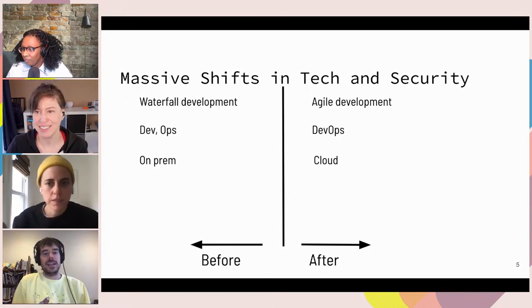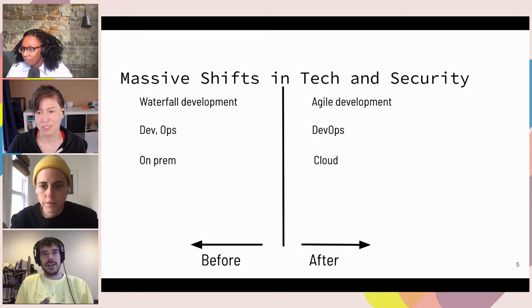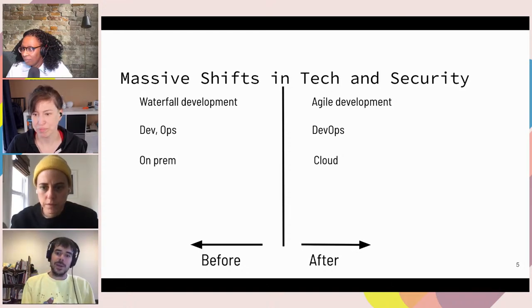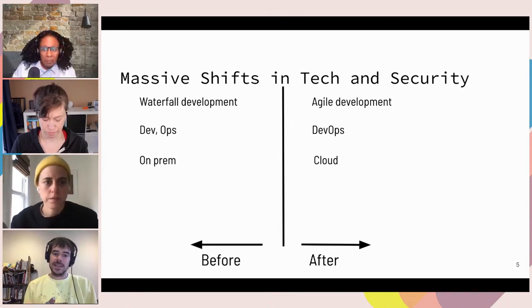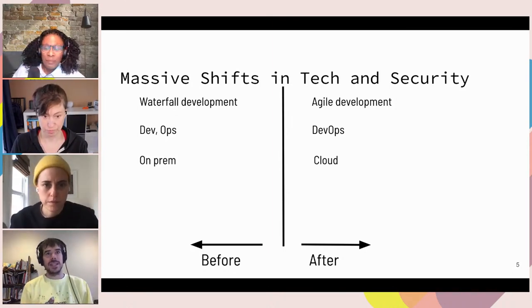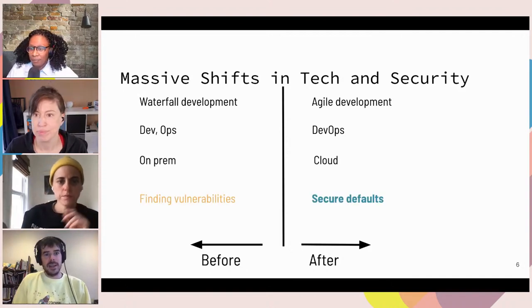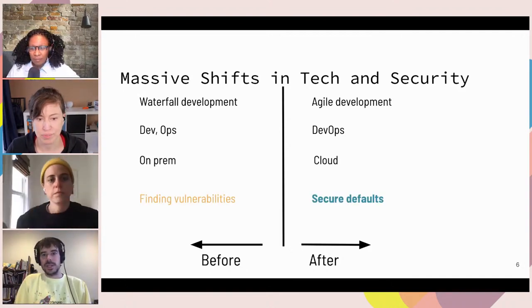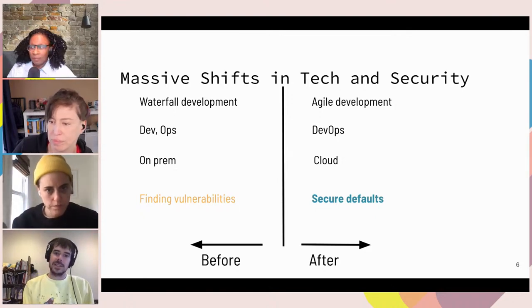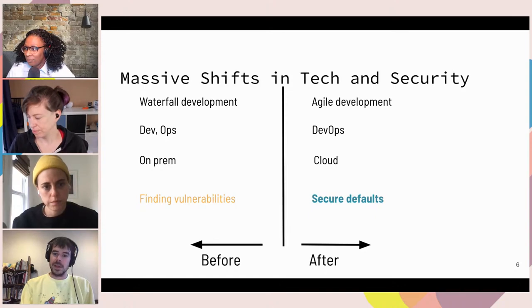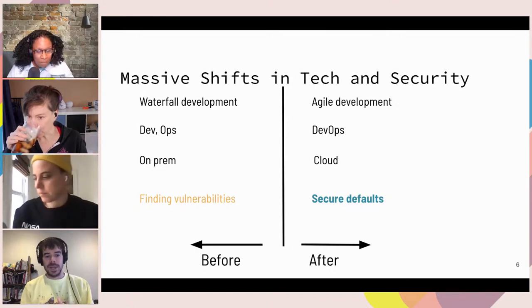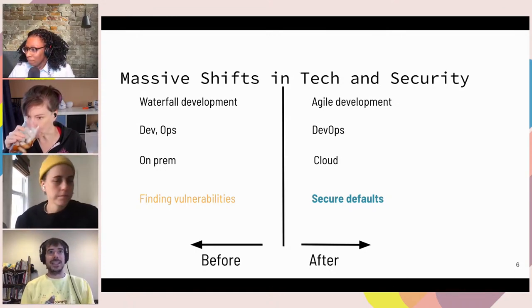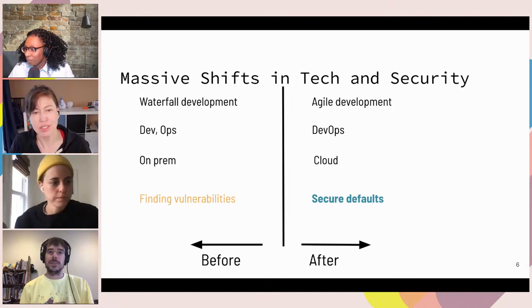Let's talk about how things are changing in the security industry. I think of it as analogous to how tech has changed — going from waterfall to agile, separate dev and ops to DevOps, from on-prem to cloud. Security is similarly going through a massive shift. Previously there was a big focus on finding vulnerabilities, and going forward I see a heavy emphasis on secure defaults: rather than finding all the bugs, build a secure-by-default way and make sure everyone uses it, solving classes of problems rather than playing bug whack-a-mole.